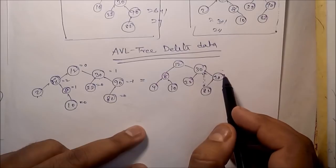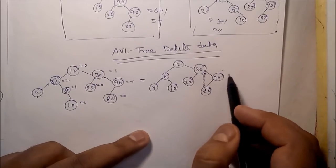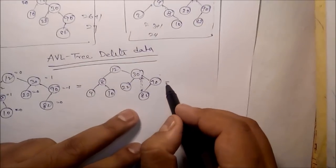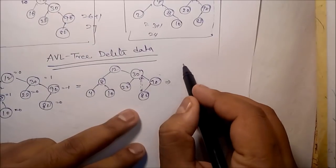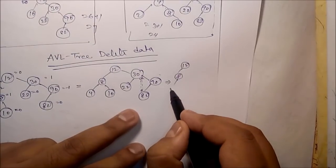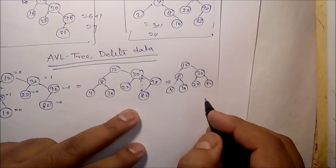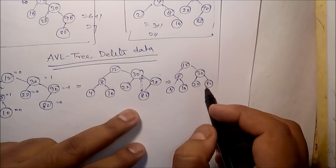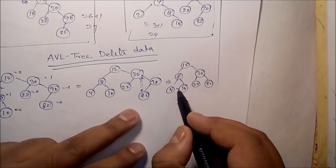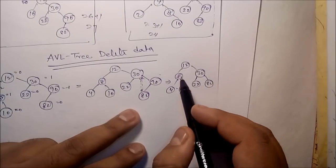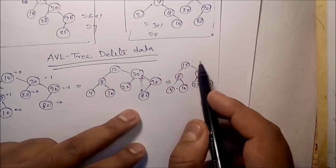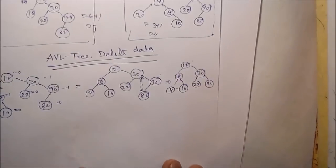If you want to delete 90 and after deletion, the tree will be: 12, 8, and 82. After deletion, you can see it is still balanced — all height differences are 0. So no need to apply any rotation technique.